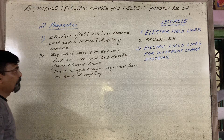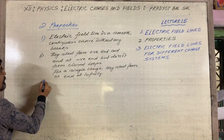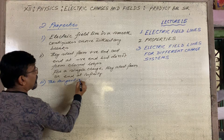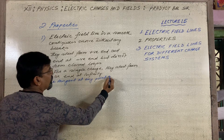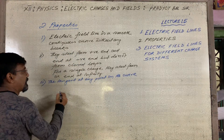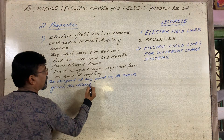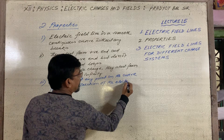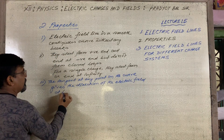Property number three: the tangent at any point on the curve gives the direction of the electric field at that point.